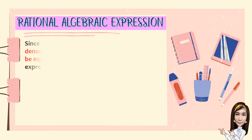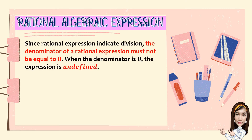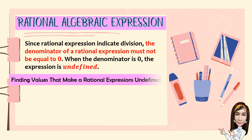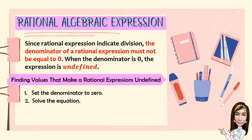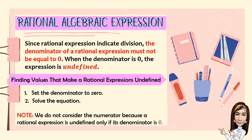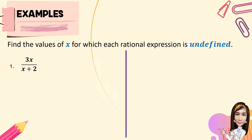Since a rational expression indicates division, the denominator must not be equal to 0. When the denominator is 0, the expression is undefined. To find values that make a rational expression undefined: first, set the denominator to 0; second, solve the equation. Note that we do not consider the numerator, because a rational expression is undefined only if its denominator is 0.